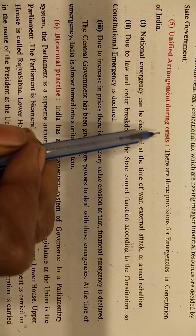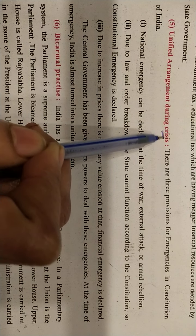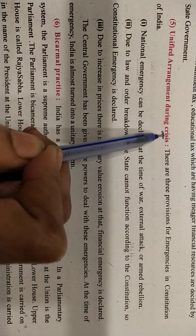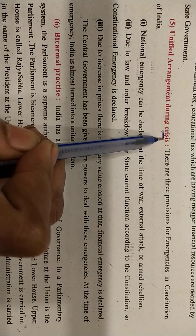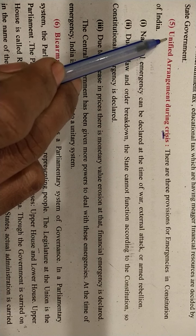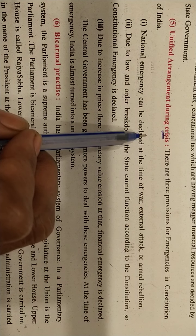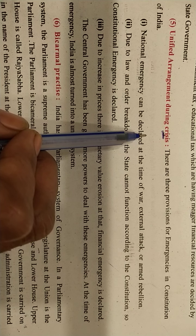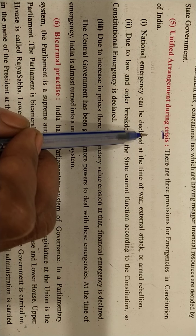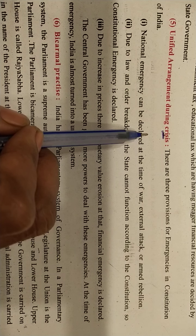Unified arrangement during crisis: when a crisis arises in any state, an emergency situation can be declared. For example, if there are major riots in Gujarat, an emergency can be announced — at that time, whatever party is ruling in Gujarat, their rule stops, and the central government (Narendra Modi) rules. This is called emergency.